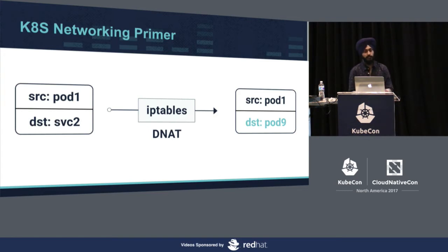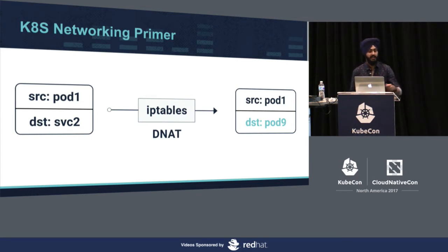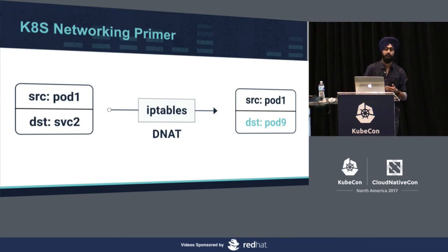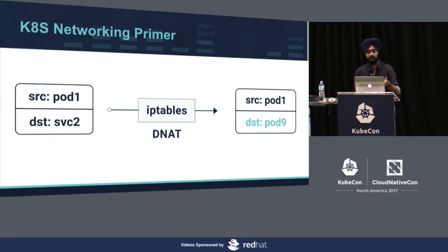When pod one makes a call to service two, since service two is not a real IP, IP tables comes into picture. It does a destination network address translation — DNAT — and changes the destination IP from the service IP to one of the pods behind that service, chosen at random. This is how the load balancing works. In this case, it uses pod nine, for example.